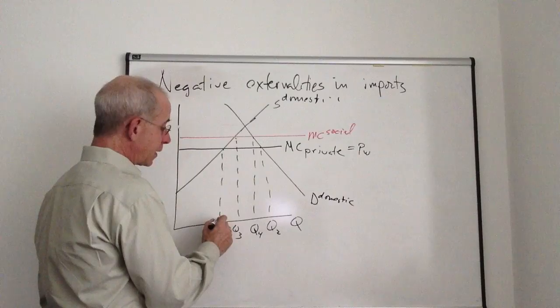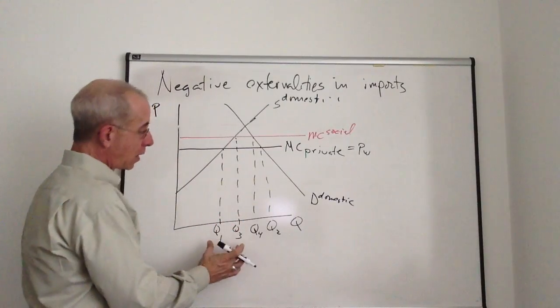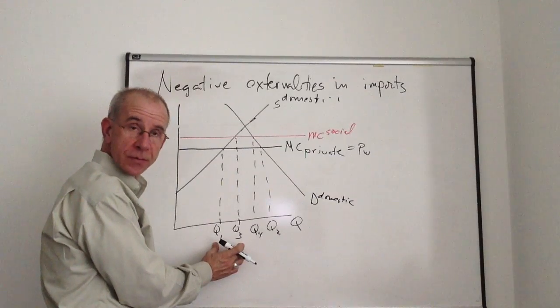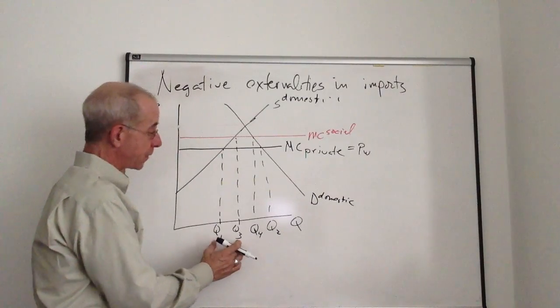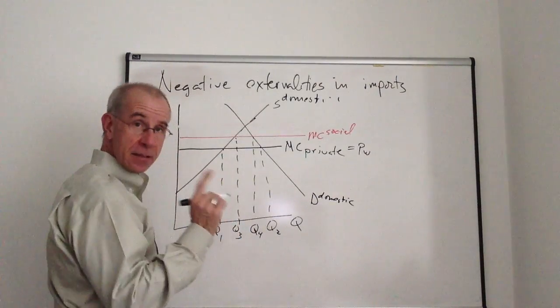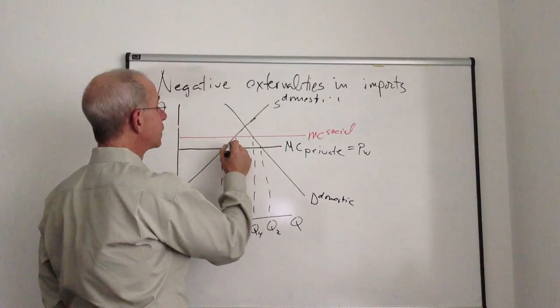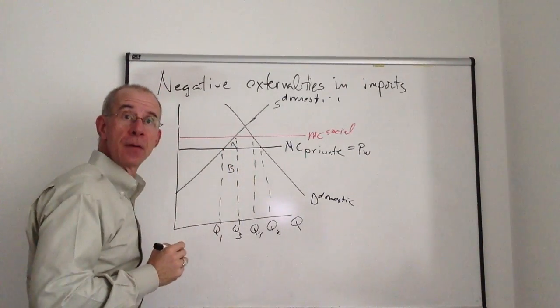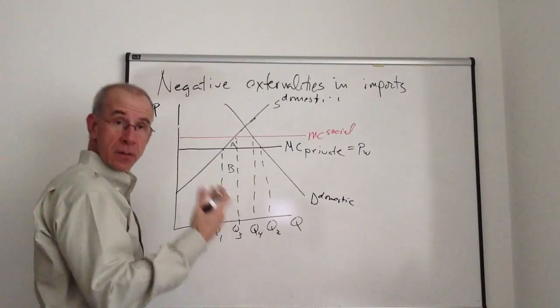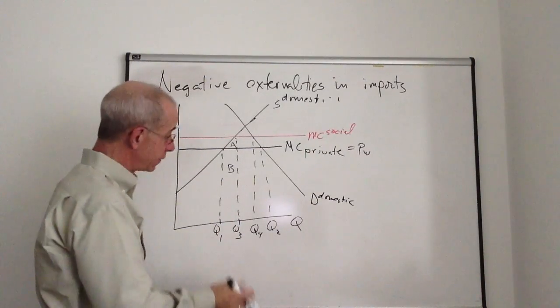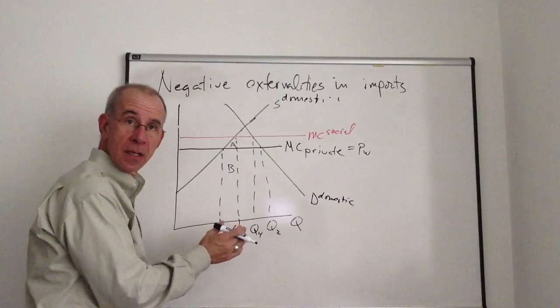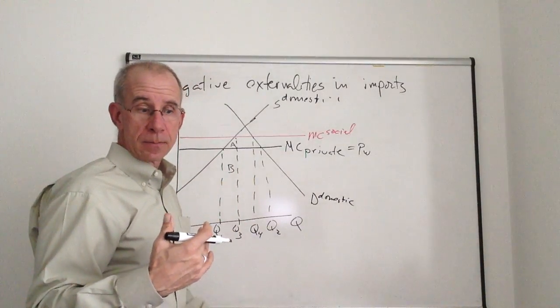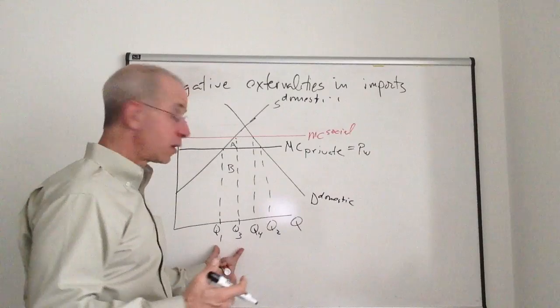So let's start on the production side. So this amount, Q1 to Q3, is part of the imports under free trade. What a domestic firm believes the cost of that might be is the area under their cost curve. So A, B, is the domestically incurred cost of producing Q1 to Q3.